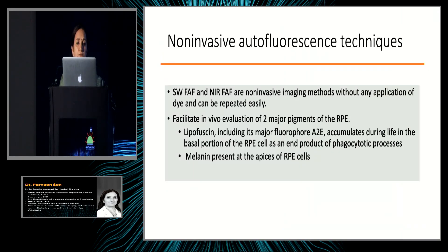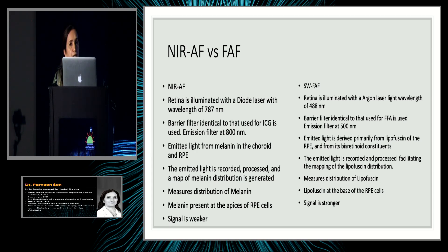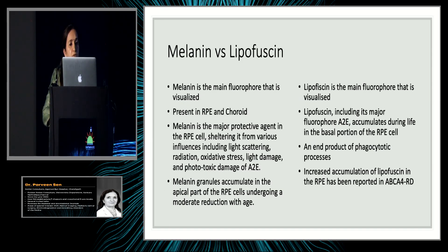Autofluorescence is a very useful technique especially for studying non-neovascular AMD. It depends on two major pigments in the RPE: lipofuscin and melanin. The technique differs between NIR autofluorescence and short-wave autofluorescence. The stimulation light is in the infrared range for NIA and blue range for short-wave, with emission filters at 800nm and 500nm respectively. Melanin in the choroid and RPE is the main fluorophore for infrared autofluorescence, while lipofuscin is the major fluorophore for blue autofluorescence.